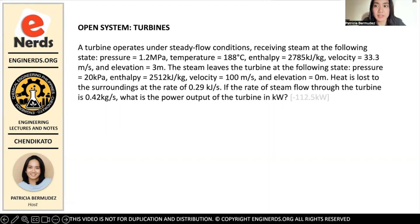The problem states that a turbine operates under steady flow conditions, receiving steam at the following state: pressure is 1.2 megapascals, temperature is 188 degrees Celsius, enthalpy is 2,785 kilojoules per kilogram, velocity is 33.3 meters per second, and there is an elevation of 3 meters.